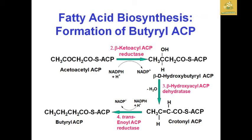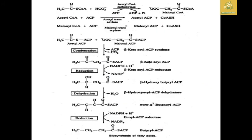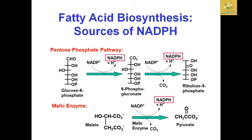The final product is butyryl-ACP. I have shown the whole pathway in a single picture: acetyl-CoA connects with ACP via acetyl-ACP; malonyl-CoA similarly connects with ACP to form malonyl-ACP. These then proceed through beta-ketoacyl-ACP synthase, beta-ketoacyl-ACP reductase, beta-hydroxyacyl-ACP dehydrogenase, and trans-enoyl-ACP reductase to give butyryl-ACP, which undergoes further oxidation — this is the total biosynthesis of fatty acids.